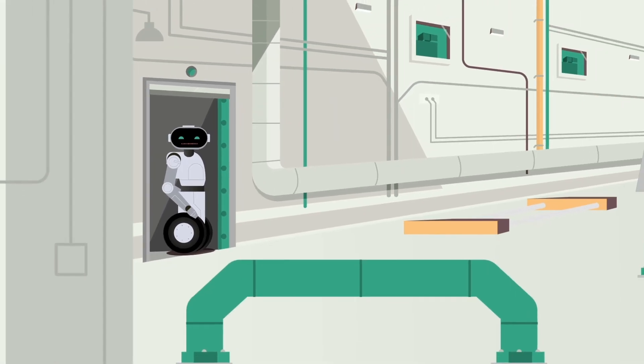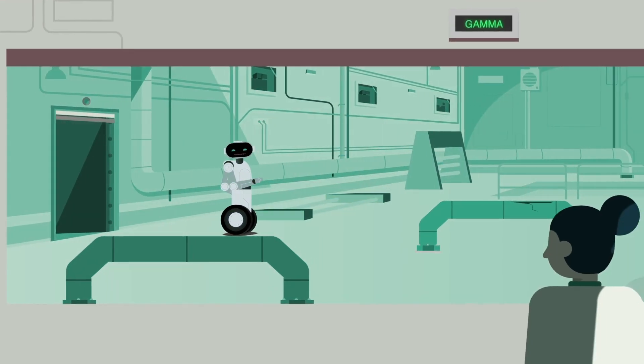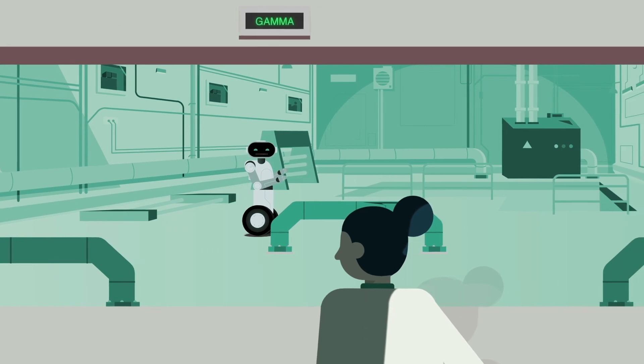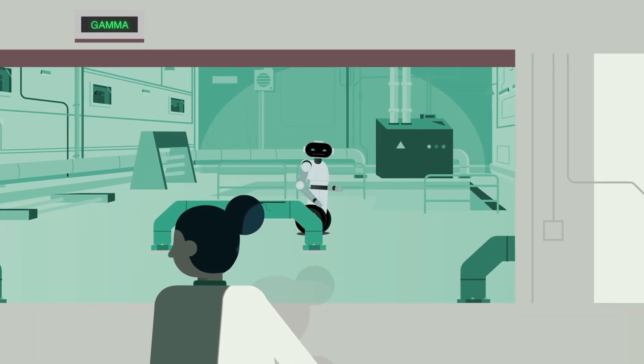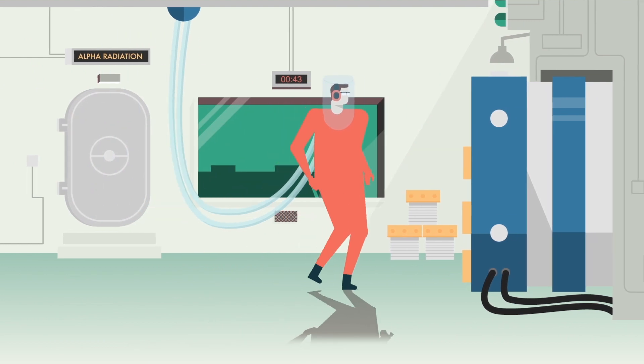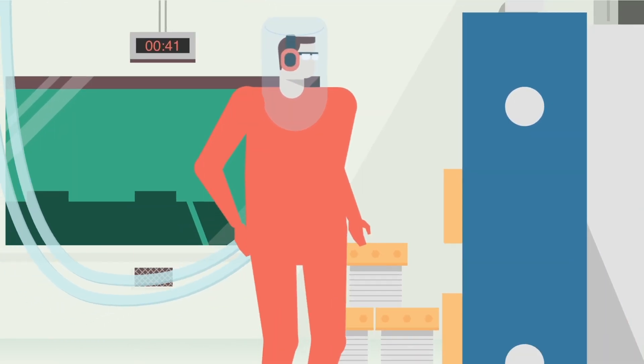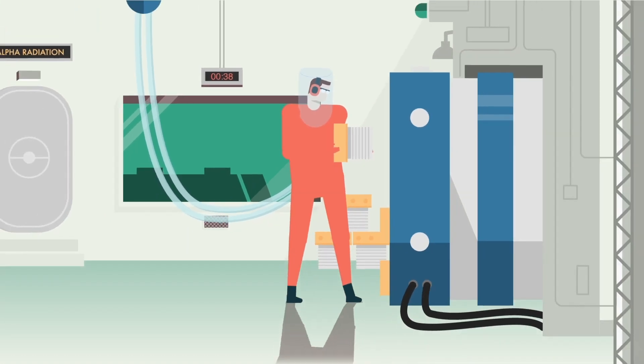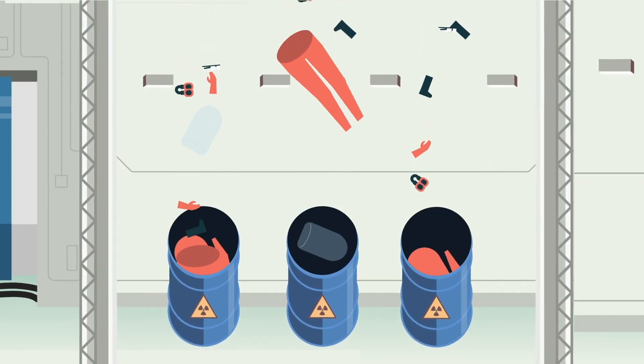Robots like me can enter no-go zones where the levels of radiation are so high it's unsafe for humans. In other areas, humans can handle radioactive materials but only for limited periods and by wearing special air-fed suits, which then become contaminated.